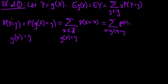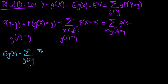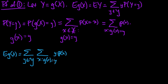Now let's plug that result back in. We have the expected value of g(X) equals the sum over little y, and moving little y inside the sum, we get the sum times p(x). Here's the nice trick: since for every x in this sum — for a fixed y — y equals g(x), we can substitute g(x) for y here.